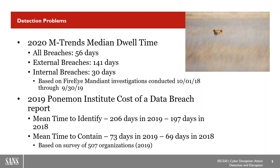Mean time to identify is effectively the same statistic as dwell time. In 2018 it was 197 days, and for the 2019 Ponemon report it was 206 days — it's actually gotten worse. Interestingly, if you look at the M-Trends report, that number has actually decreased for FireEye customers, whereas globally the number has gone up. The mean time to contain — once we detect the attack, how long does it take to respond — was 73 days in 2019, versus 69 days in 2018. We are getting worse.